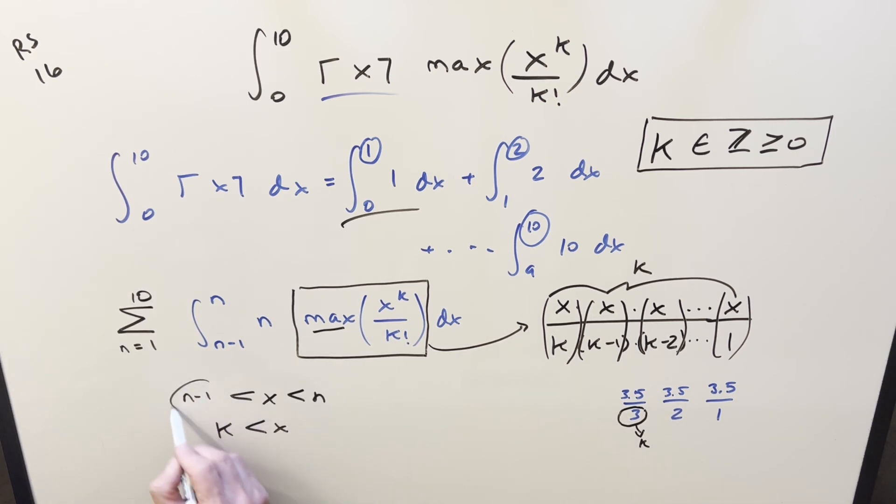One number that works is n minus 1. You can't choose the next higher integer, because that would be n. That's greater than x, so that's not going to work for our k value. But you also, you couldn't have k equal to n minus 2.